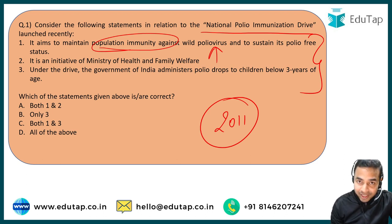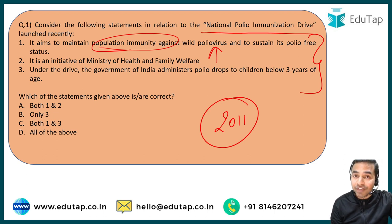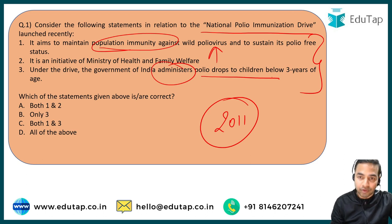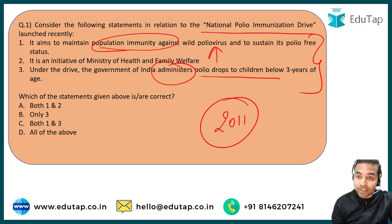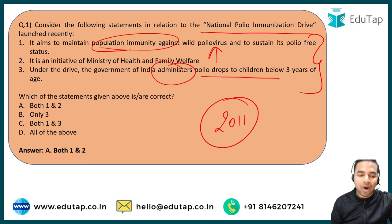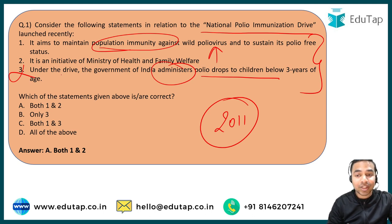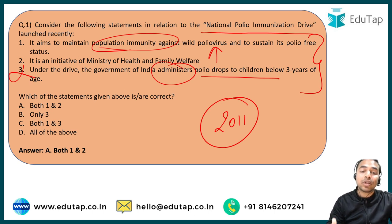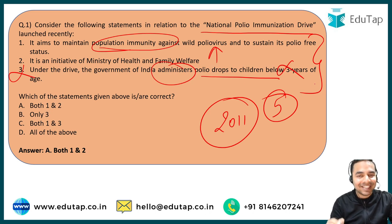Statement 2 says it is an initiative of the Ministry of Health and Family Welfare. Statement 3 says polio drops are administered to children below 3 years of age. The correct answer is statements 1 and 2 — statement 3 is incorrect because the polio drops are administered to children below 5 years of age, not 3.